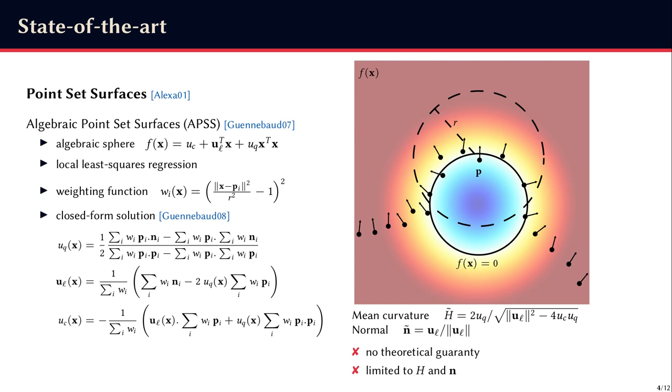Unfortunately, we have no guarantee on the accuracy and robustness of these two estimators, and we are still limited to h and n, since the APSS do not provide estimators for principal curvatures. Basically, the method I will explain provides solutions to these two limitations.